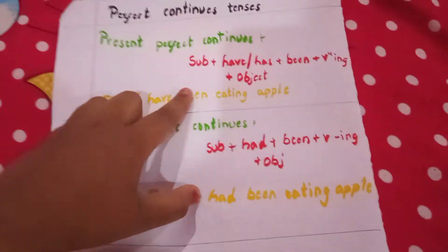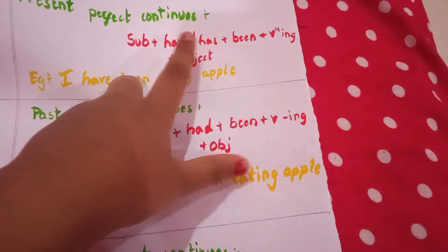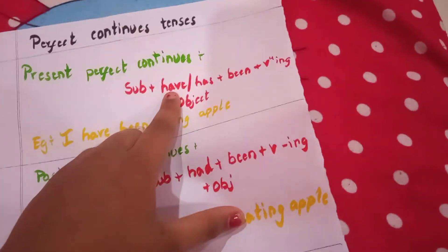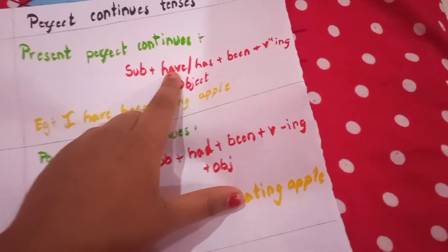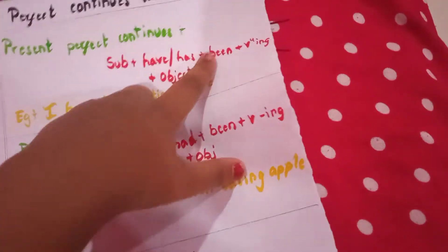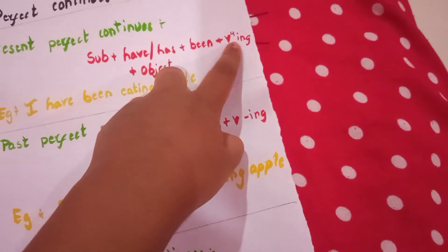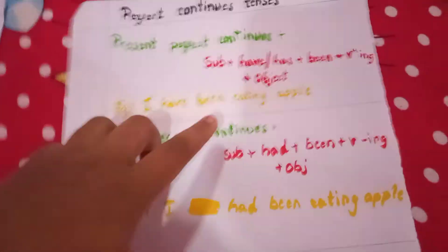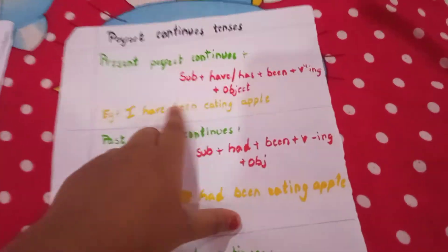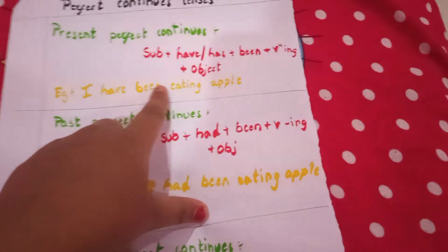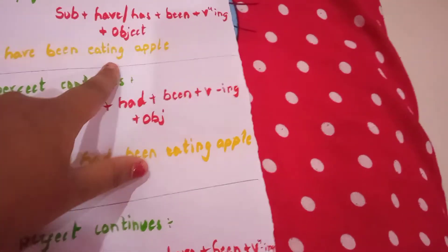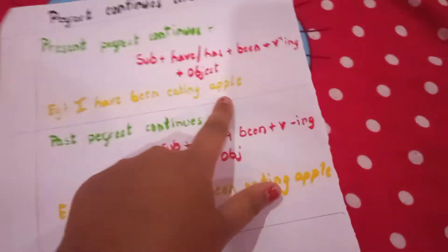Now, perfect continuous tense — present perfect continuous. The formula is subject plus have or has plus been plus V4 plus object. 'Have' is used for I, you, we, they; 'has' for he, she, it. V4 means adding '-ing'. Example: 'I have been eating apple.' 'I' is the subject, 'have been' is the auxiliary, 'eating' is V4, and 'apple' is the object.